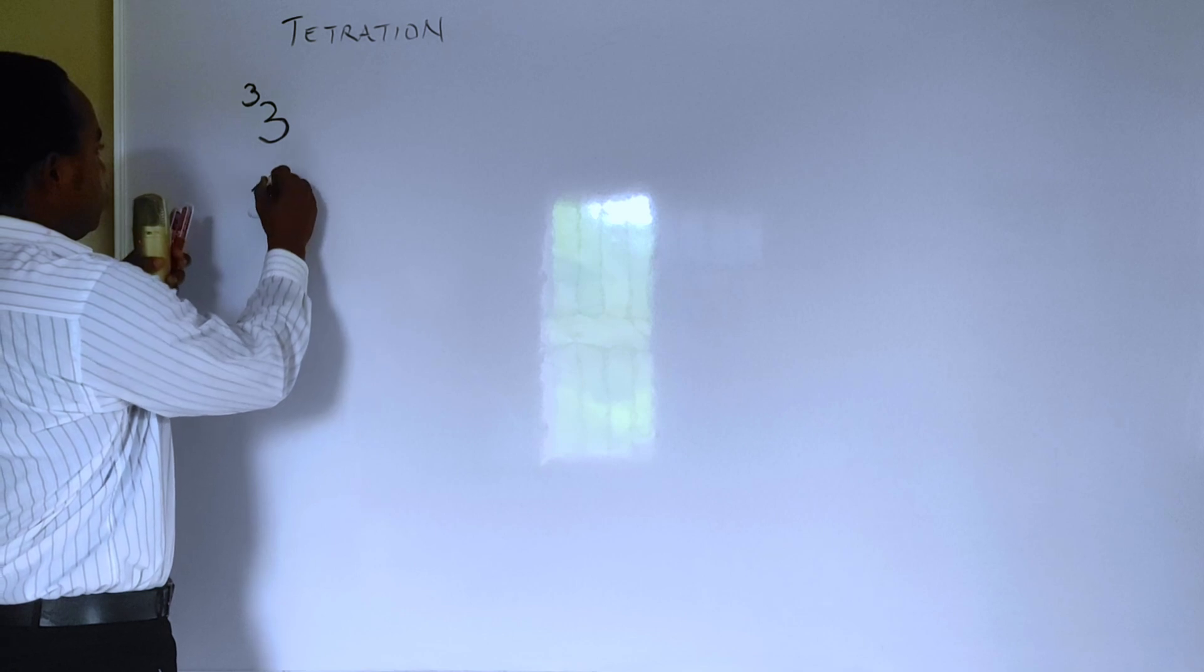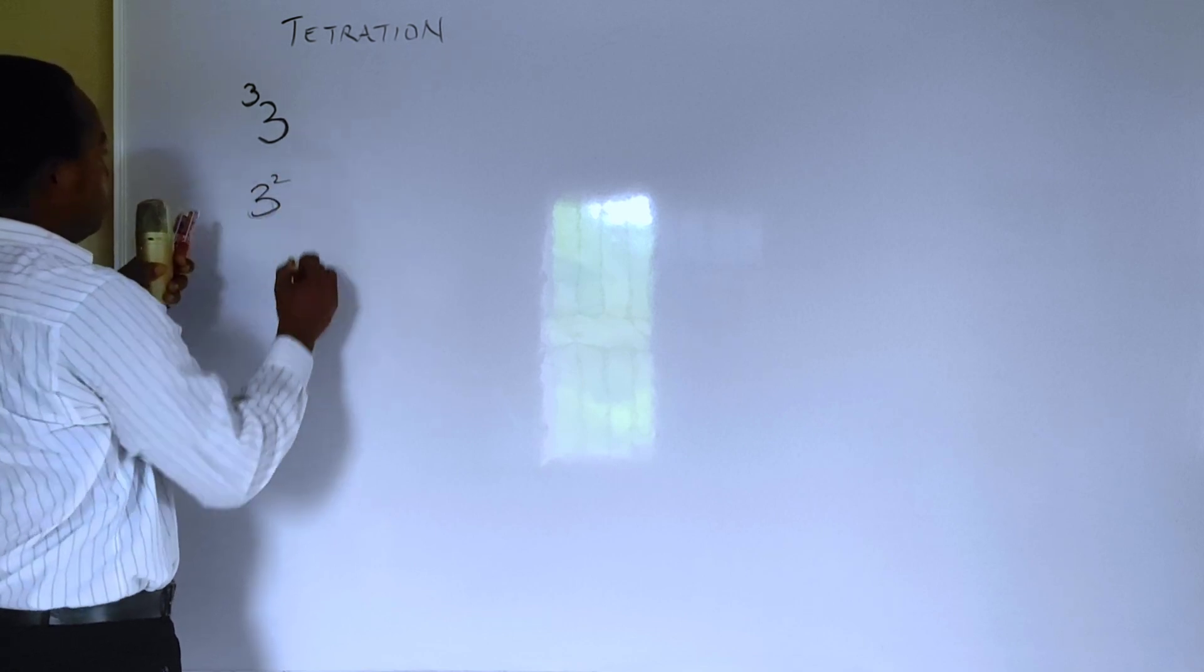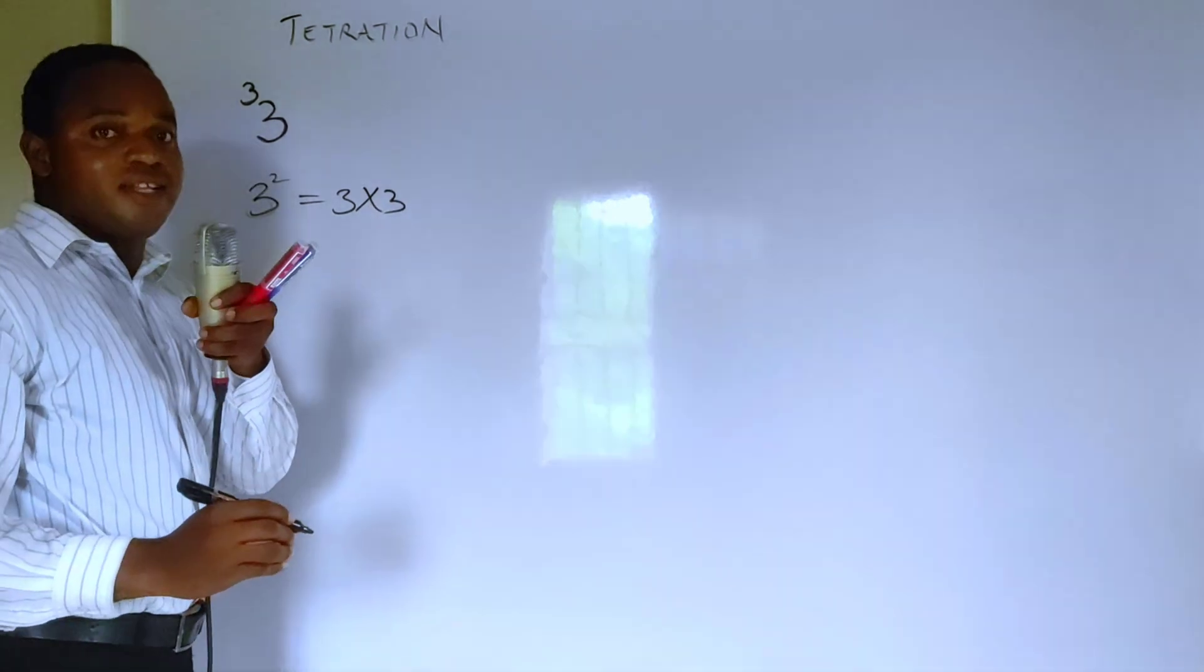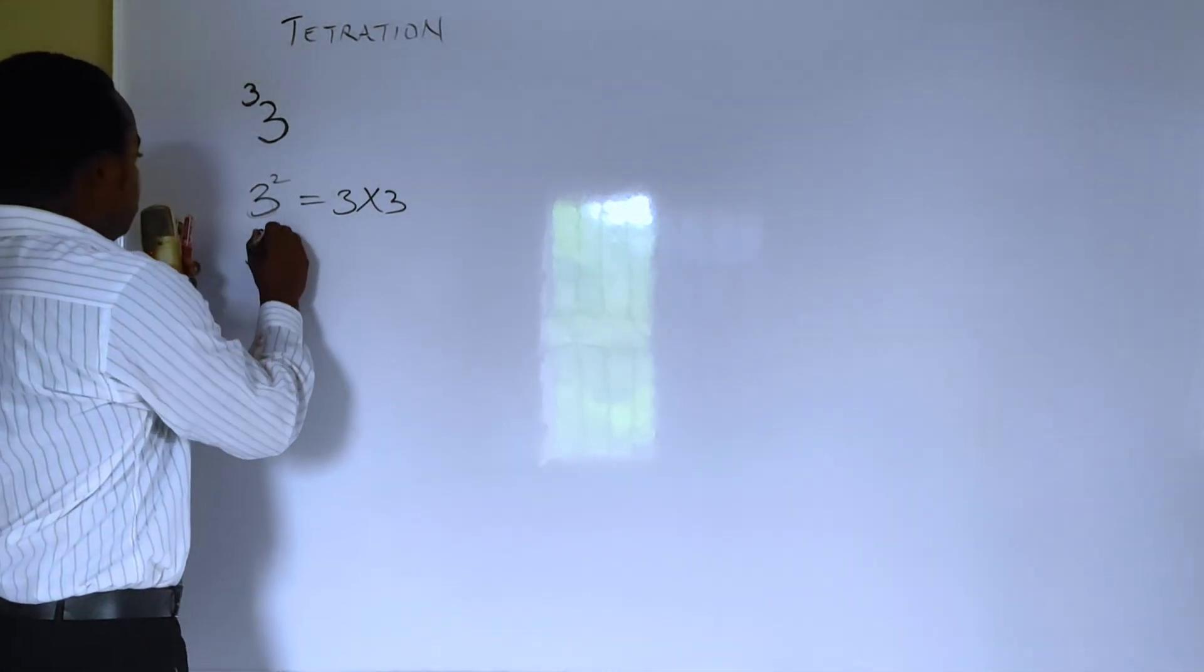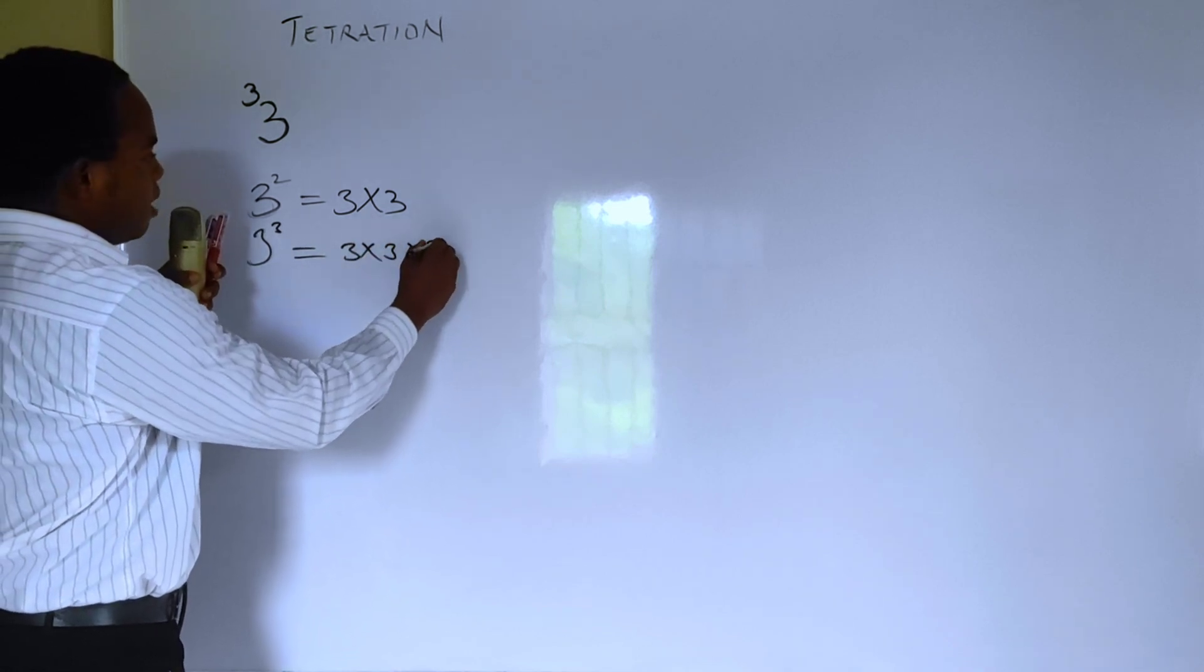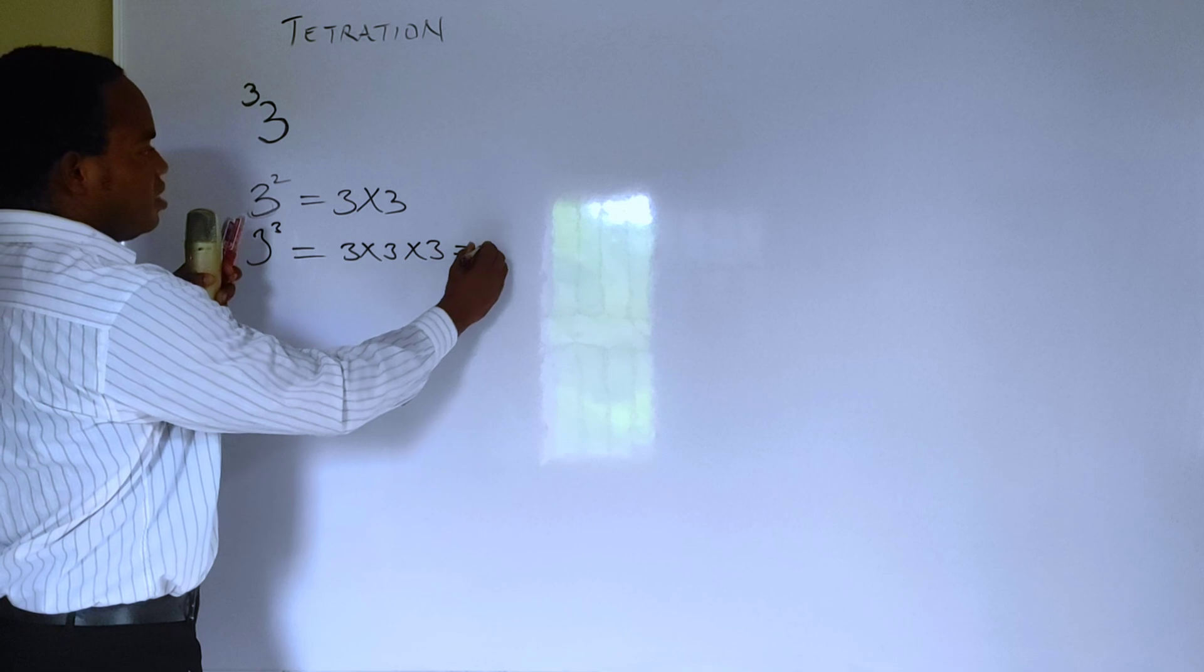This is equal to 3 multiplied by 3, right? Well, if it's 3 raised to power 3, this is 3 multiplied by 3 and multiplied by 3, right? Where this is 27 and this is 9.